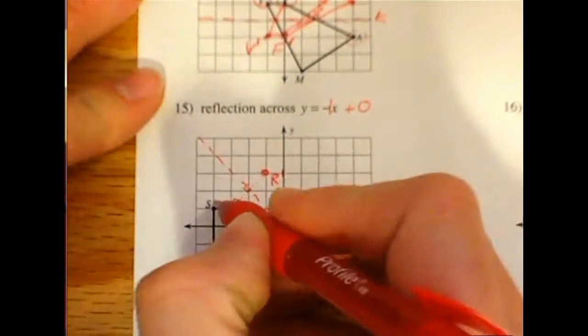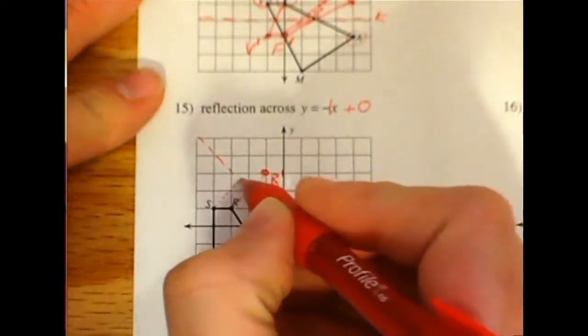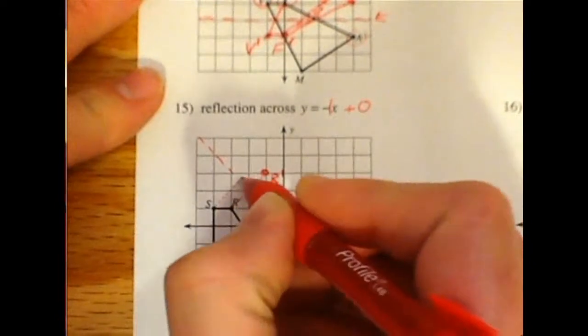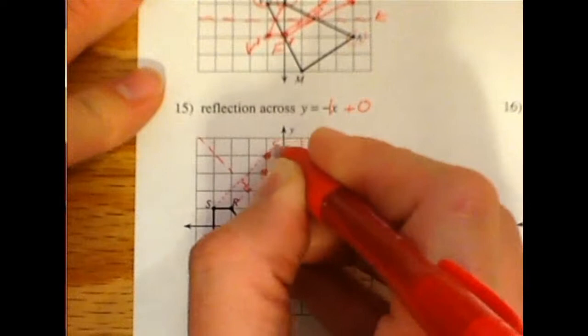Same thing with s. If you diagonal straight into it, it looks like we're 1.5 units at a diagonal, 1.5 diagonal parts. Keep going. And you're going to end up with your s prime.